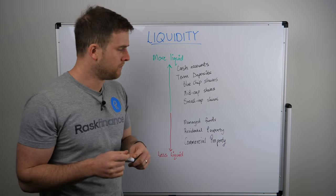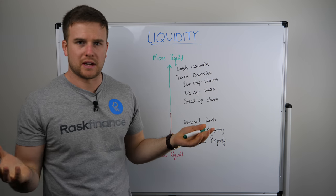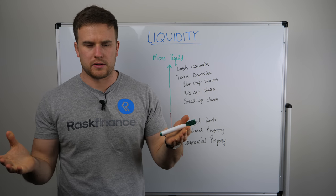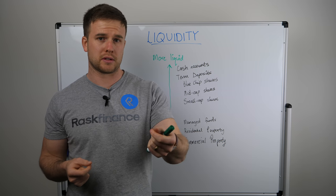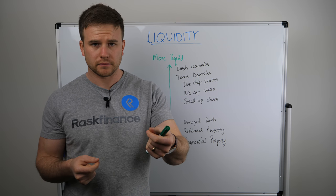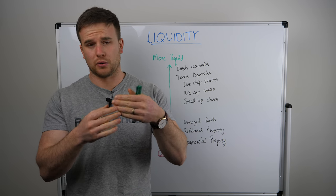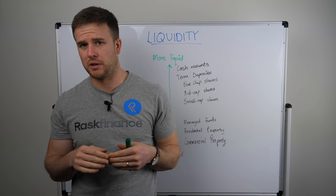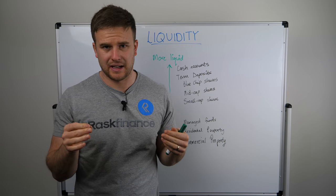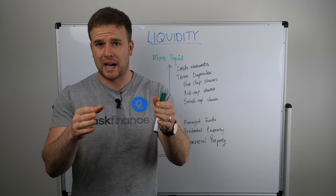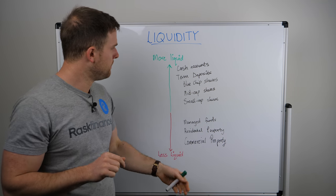At the top we have cash accounts — so this could be a savings account at a bank. For example, you go to a retailer and you purchase something; generally you can get that money within a few seconds, or the retailer will receive your money within a few seconds. So that is a very liquid asset. Your cash in the bank is very liquid because it is easy to get the money in and out of.